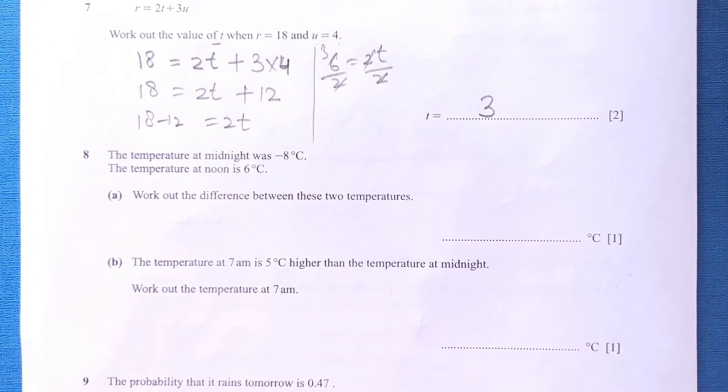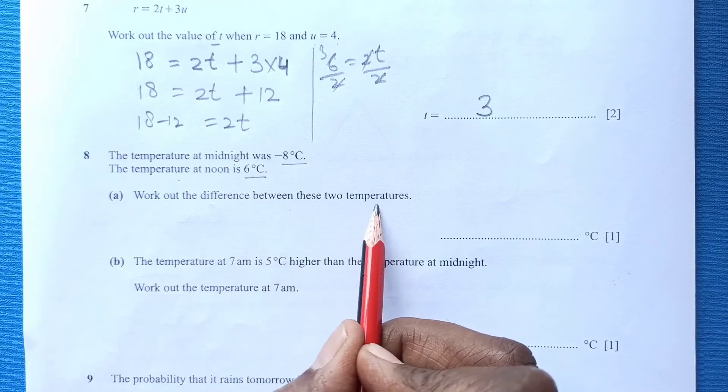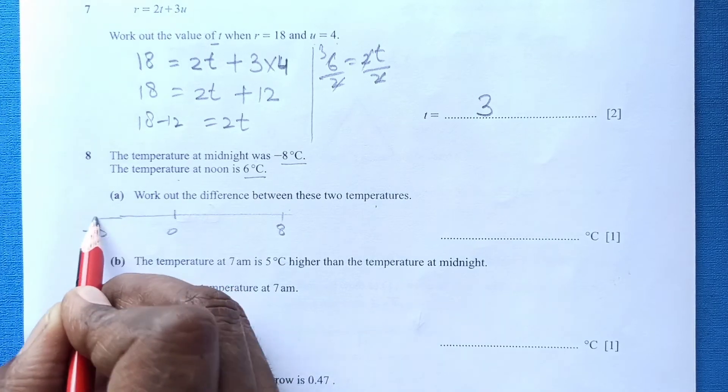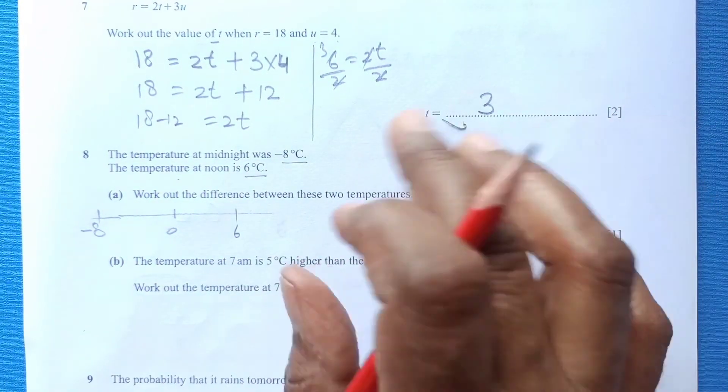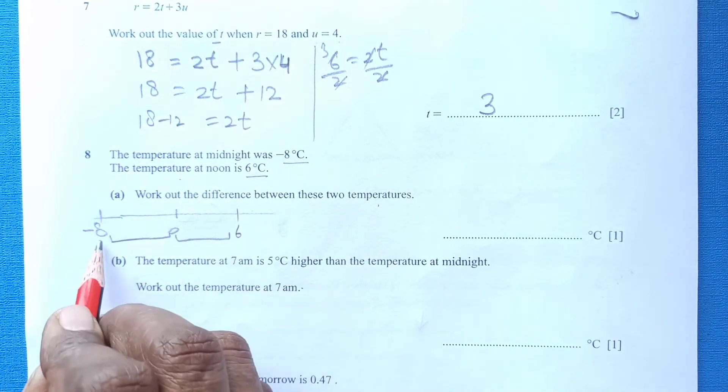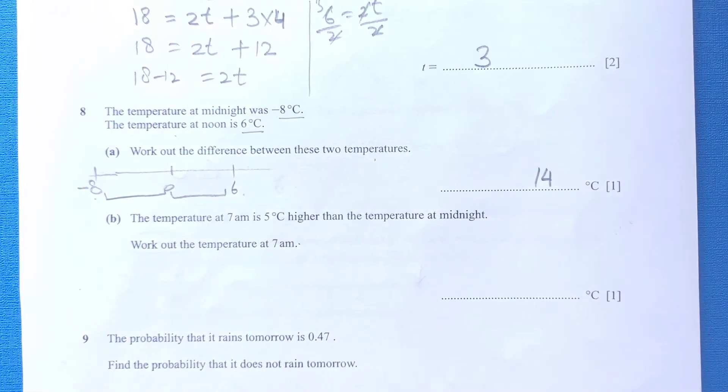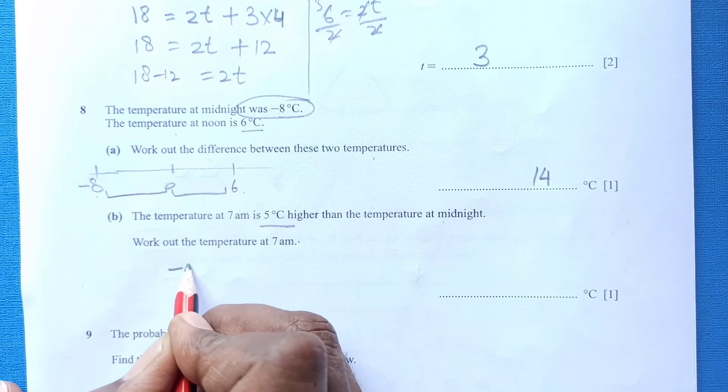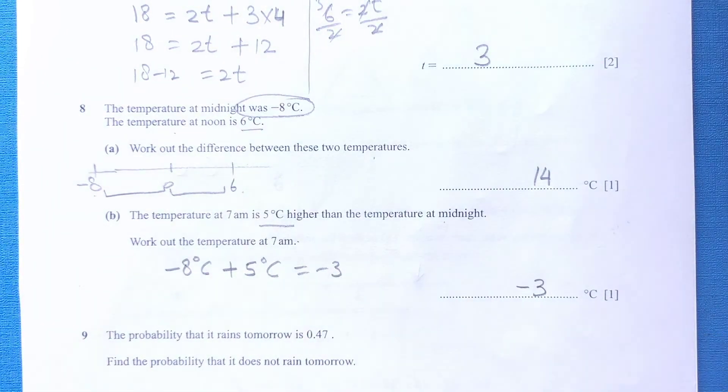Number 8: The temperature at midnight was negative 8 and temperature at noon was 6. Work out the difference between these two temperatures. From 8, negative 8 is this side and this is 6 somewhere here. Difference is 8 is here, 6 is here. 8 plus 6, it is 14. So the difference is 14 degree Celsius. Part B: the temperature at 7 AM is 5 degree Celsius higher than the temperature at midnight. Midnight temperature was negative 8 degree Celsius and now it is higher 5 degree. So this will be negative 3.